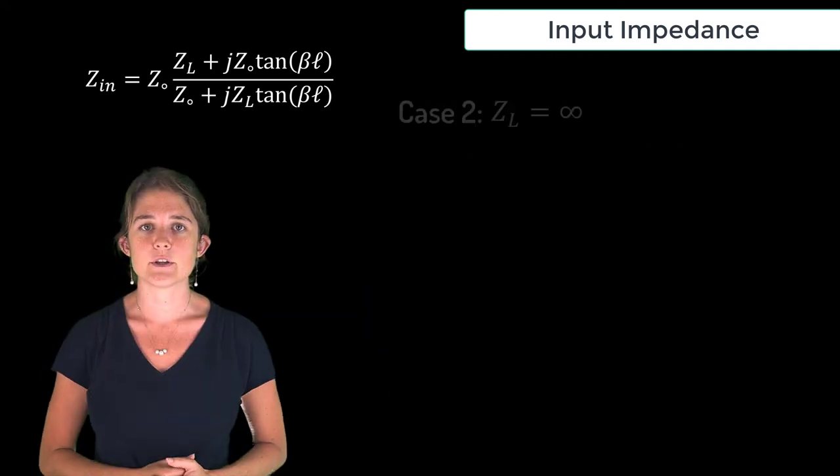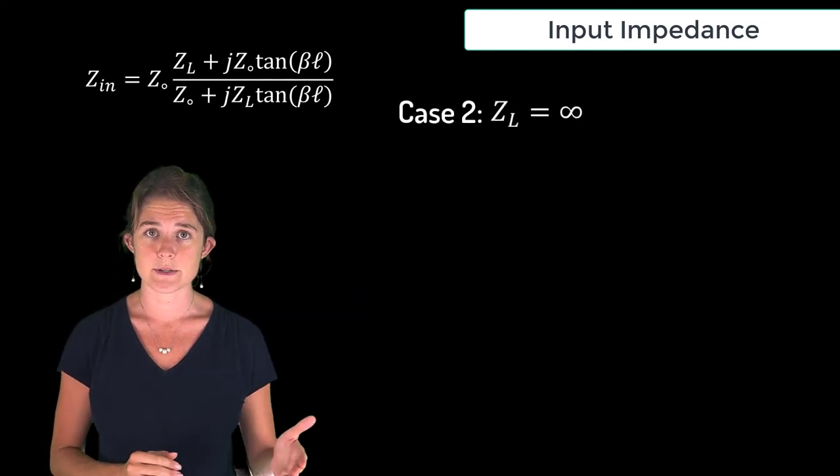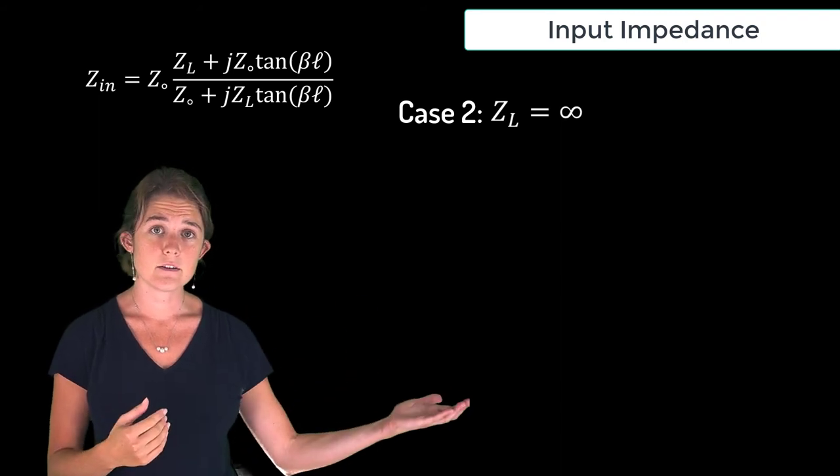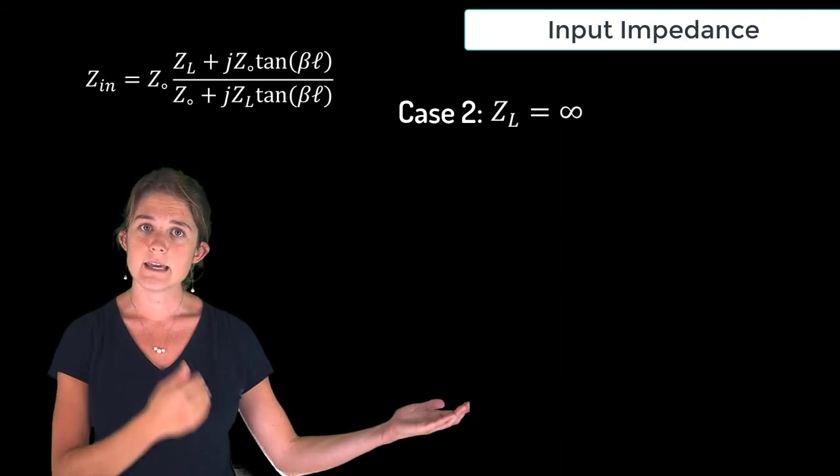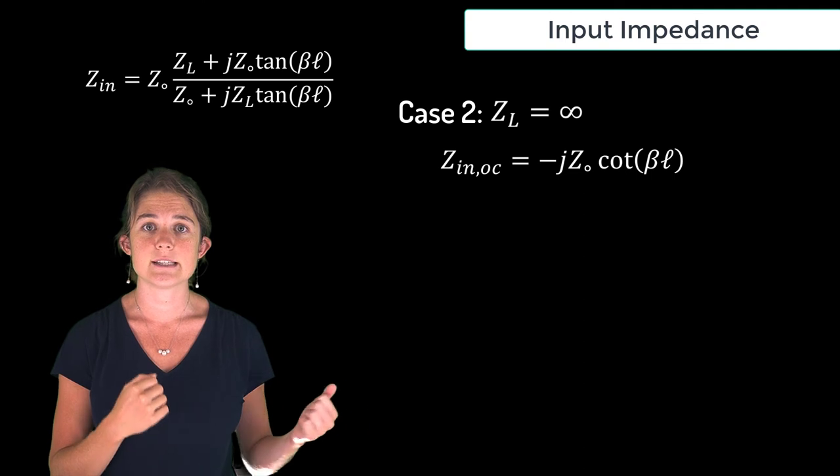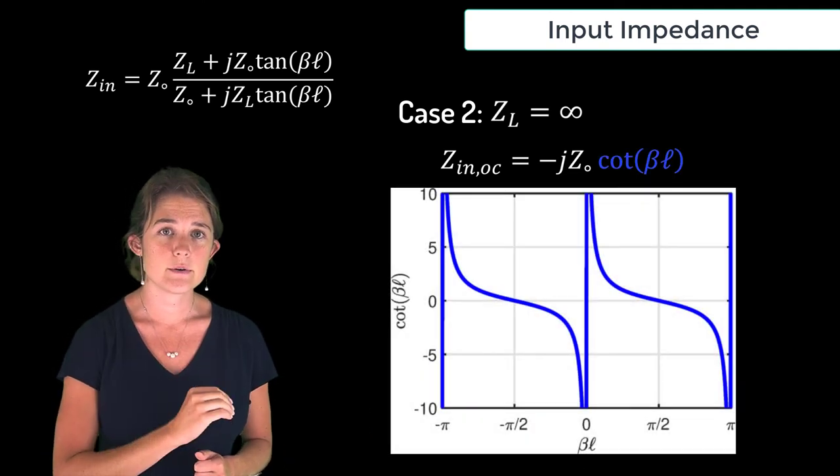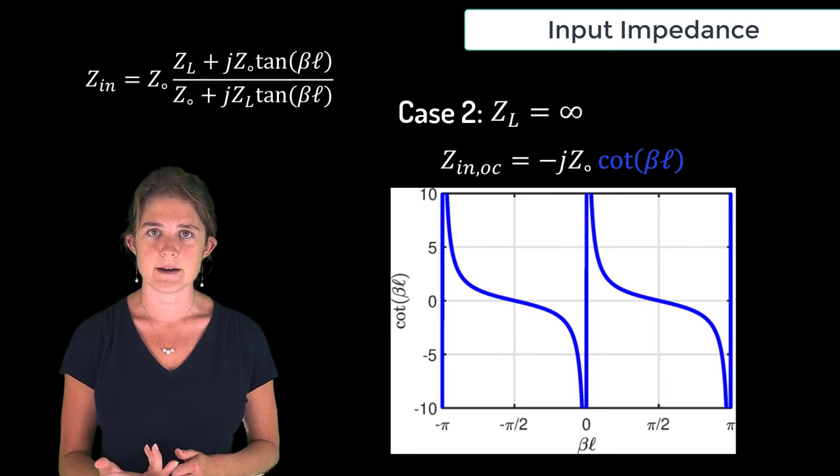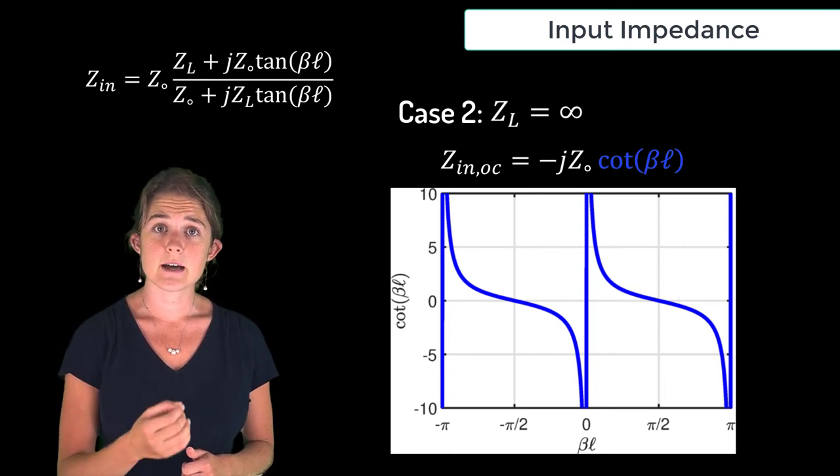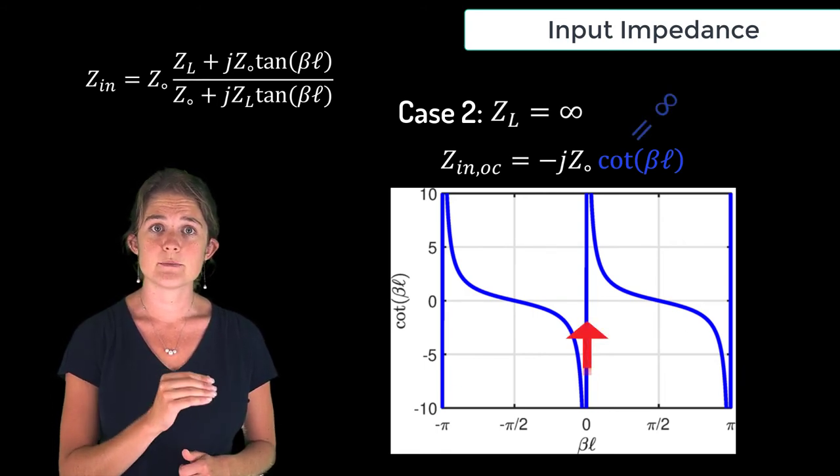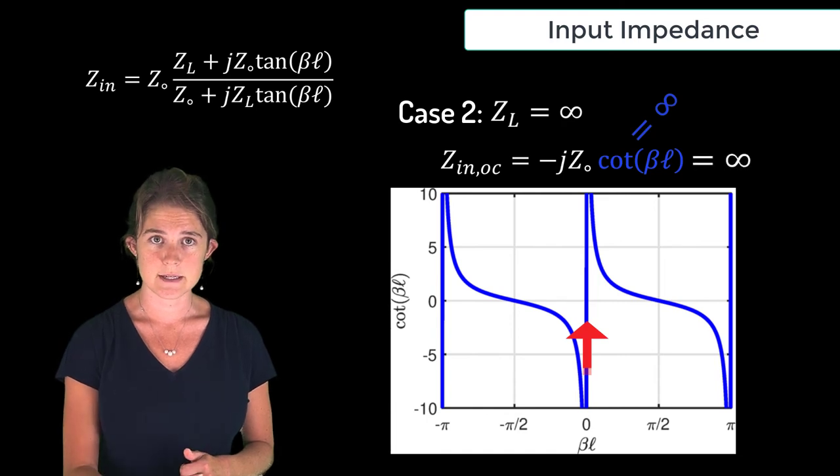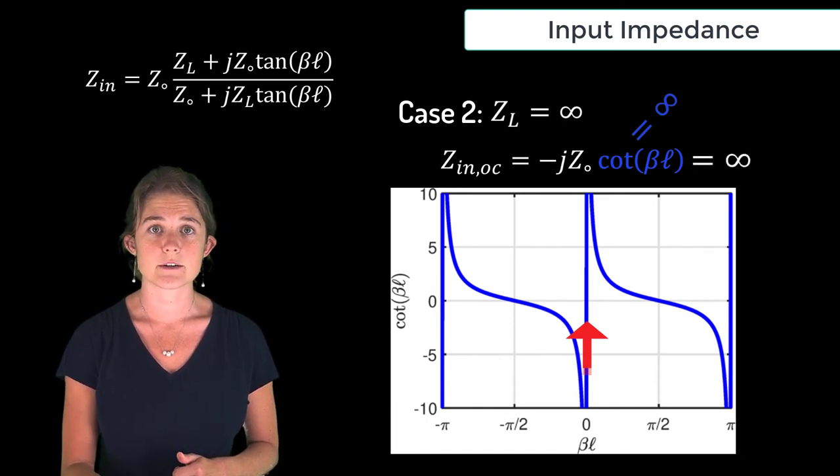The second case we'll look at is termination with an open circuit. Here ZL goes to infinity and ZN becomes negative JZ0 cotangent beta L. This is a graph of cotangent beta L with respect to beta L. Note that if L equals zero cotangent beta L is infinite and the input impedance is infinite which is what you would expect for an open circuit.